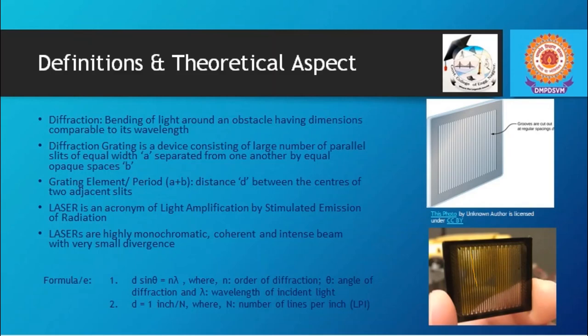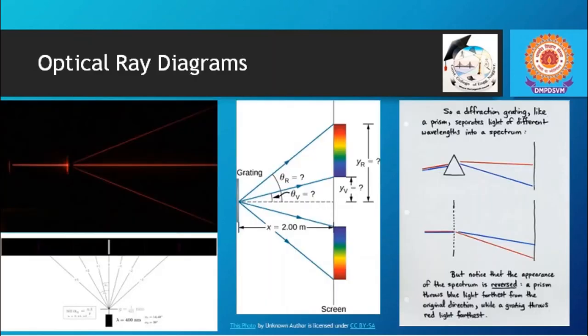If we look into the formula for diffraction grating, we can see that d is a constant for a particular grating, n is order of diffraction, which is either 1, 2 or 3 at max. Considering d and n constant, sin θ appears to be directly proportional to λ. So the longer wavelengths will be observed at higher values of θ and shorter wavelengths will be observed at smaller values of θ after passing through the diffraction grating.